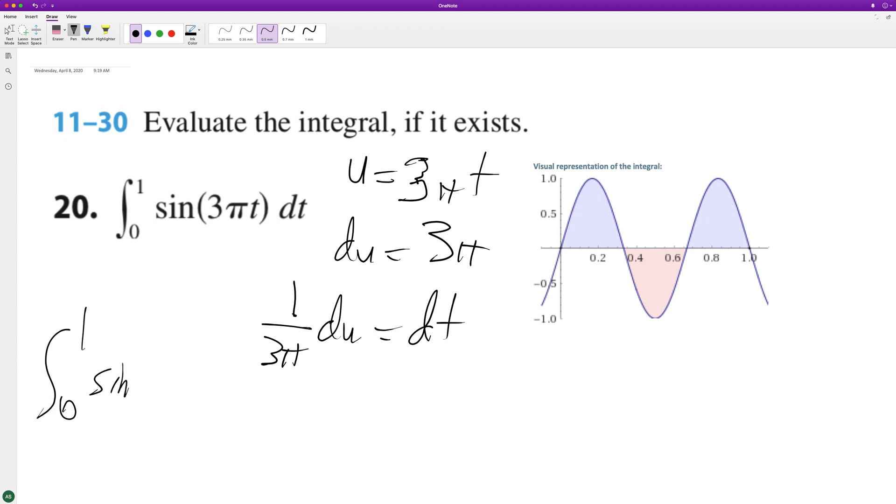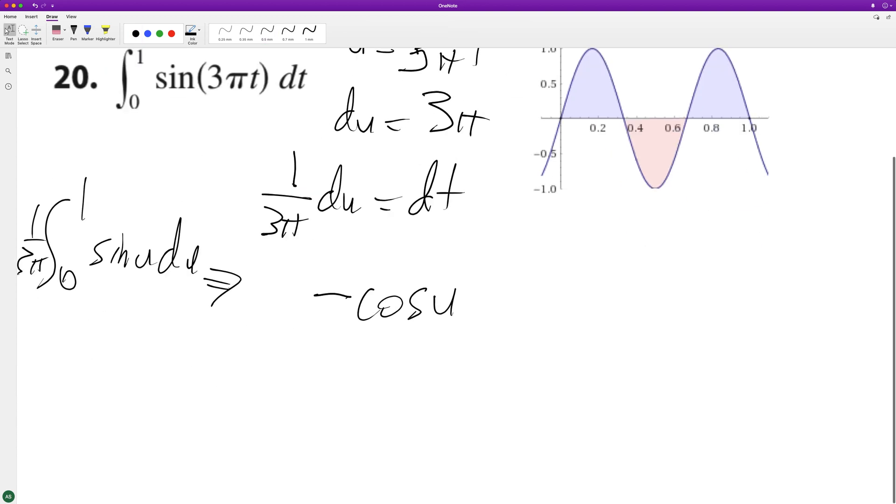0 to 1, sine of u du. And then we have the 1 divided by 3 pi on the outside there. So when we integrate this, the integral of sine of u is negative cosine, negative cosine of u.